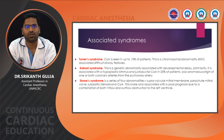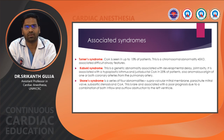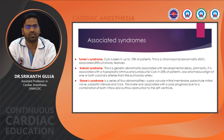Associated syndromes include Turner syndrome, Kabuki syndrome, and Shone syndrome. In Turner syndrome, coarctation of aorta is seen in up to 15% of patients. This is a chromosome abnormality of 45X0, associated with difficult airway features.